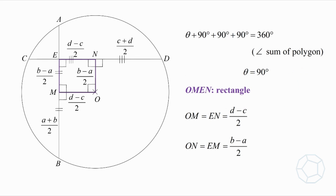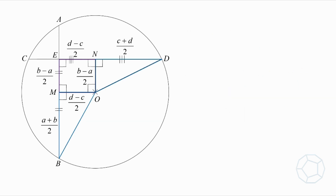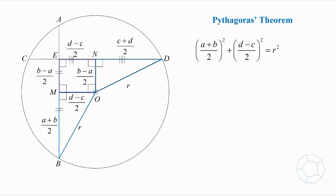Up to here, it has nothing to do with the radius of the circle yet. What should we do? Let's construct the radii OB and OD. That's nice — we have two blue right-angled triangles. We can apply the Pythagorean theorem. For the first one: ((a + b) / 2)² + ((d - c) / 2)² = R². We take out the common denominator and call this equation 1. Well, this one is already expressing R in terms of a, b, c, d.